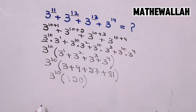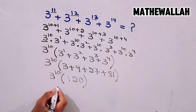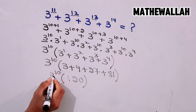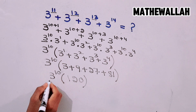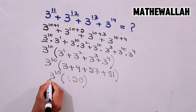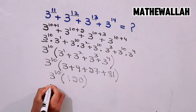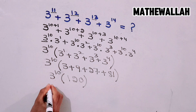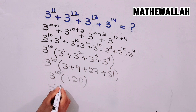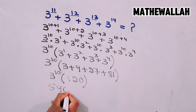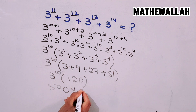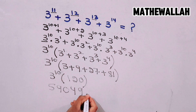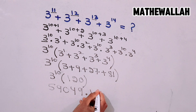Now, 3 power 10 is equal to 59049. So we compute 59049 multiplied by 120.